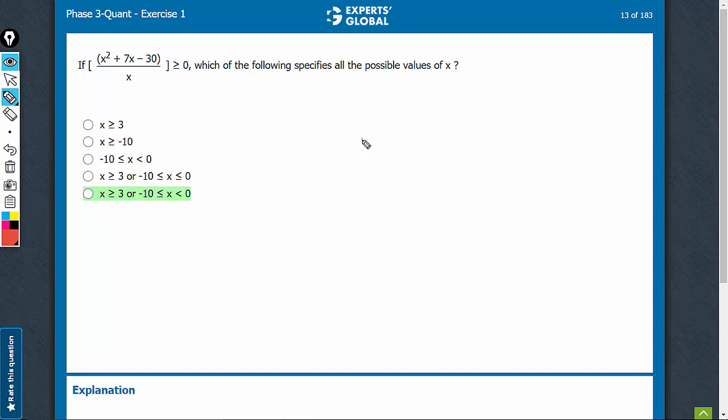The numerator would be factorized into x squared plus 10x minus 3x minus 30, denominator is x anyway, greater than or equal to 0.